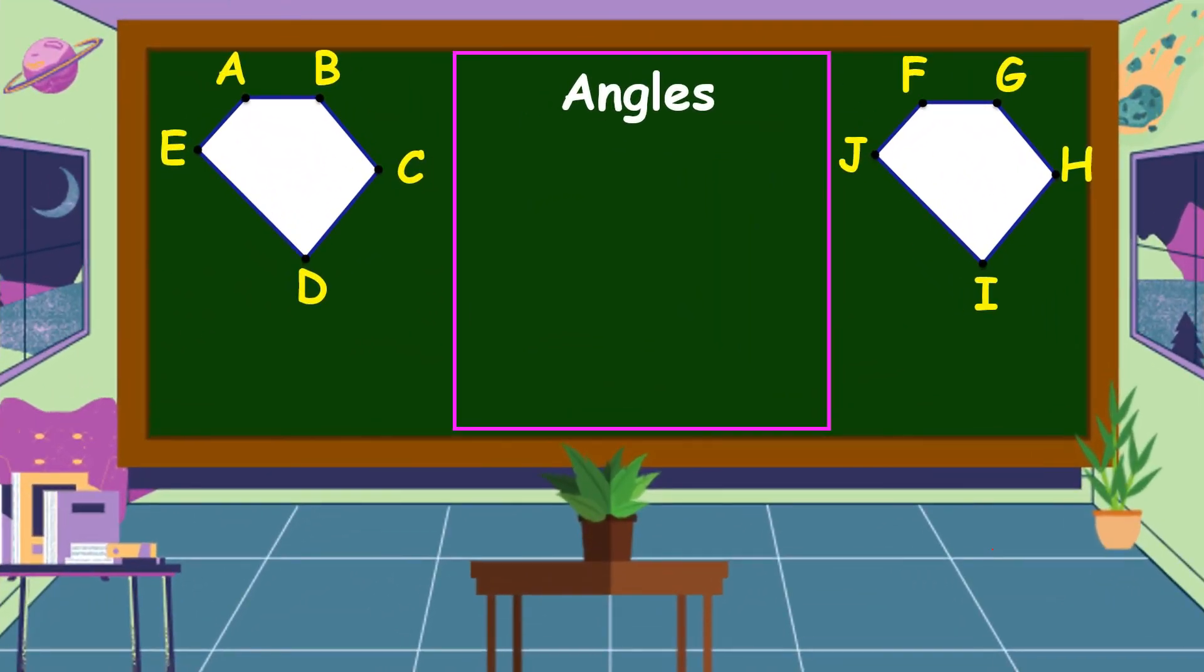Now, let's evaluate the corresponding angles. So, angle ABC is congruent to angle FGH. Angle BCD is congruent to angle GHI.